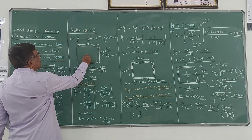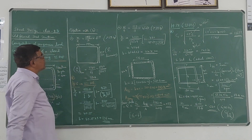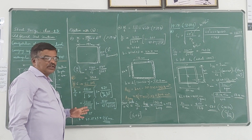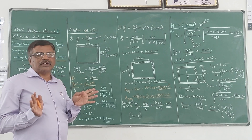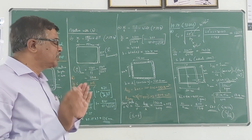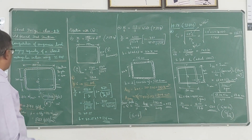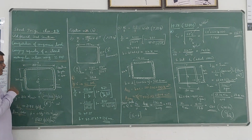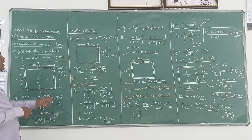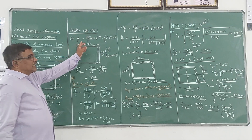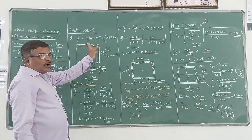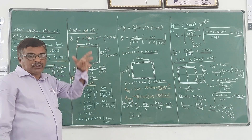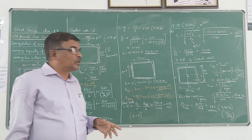In a closed section, all the elements are supported on both sides, so they are all treated as stiffened elements. We need to consider two widths: one along the X direction and another along the Y direction. For the W/T ratio calculation as per the code, we take the centerline dimensions.